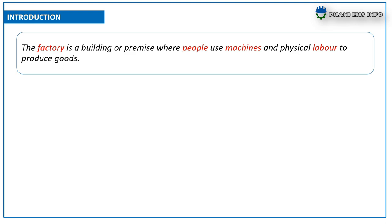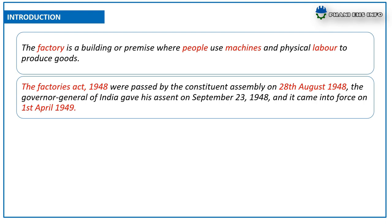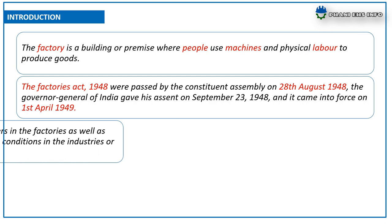A factory is a building or premises where people use machines and physical labor to produce goods. The Factories Act 1948 was passed by the Constituent Assembly on 28th August 1948. The Governor General of India gave his assent on September 23rd 1948, and it came into force on 1st April 1949.